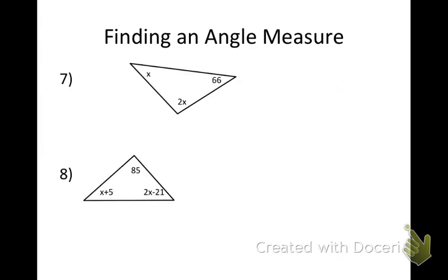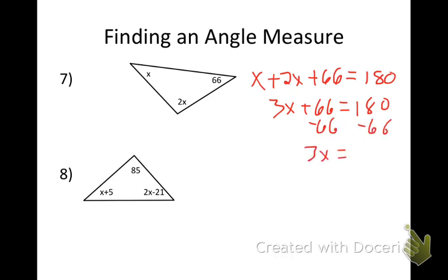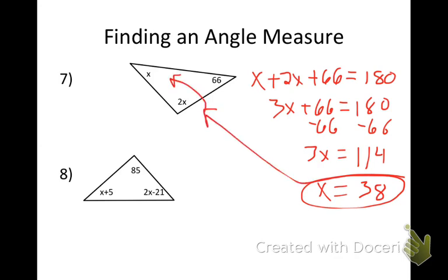What happens if I have a problem like this? If you look at number 7, I have X, 2X, and 66. I have to set up to solve these. What's the inside of a triangle add up to? 180. So I'm just going to set up an equation and solve. X plus 2X plus 66 equals 180. X plus 2X is 3X. So I get 3X plus 66 equals 180. Subtract 66. 3X equals 114. I end up with X equals 38. Now I take that 38 and I plug it into my angles up there. I have 38 degrees and the other one is 76 degrees.